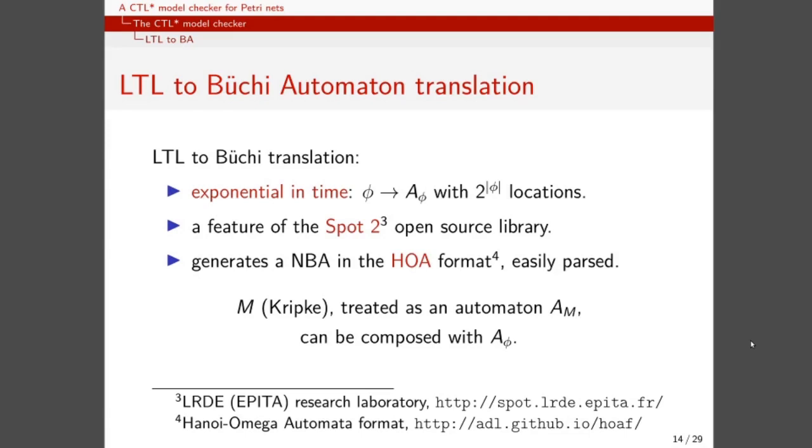The first of the blocks we haven't described yet is the translator between LTL and Büchi. This translation procedure is exponential in time and is not something we wanted to build our own, so we relied to the Spot2 open source library, which is capable of generating a non-deterministic Büchi automaton in a format which is easy to parse. This translation is necessary because we can consider both the automaton M and the formula phi as Büchi automata. We can then compose them to generate a synchronous product which is another Büchi automaton which accepts only the computations defined by the formula phi.